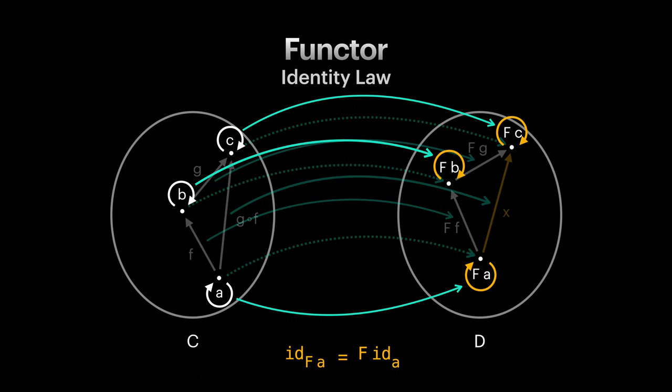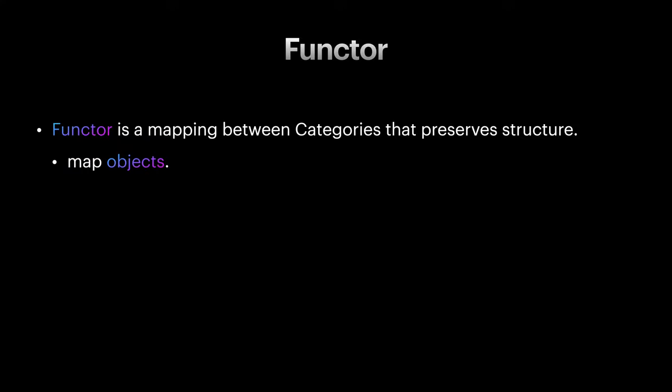All right, so many points and arrows. Let's recap. Functor is a mapping between categories that preserve structure between them. This mapping includes mapping of objects, mapping of arrows in a way that it preserves identity morphism and it preserves composition of morphisms.